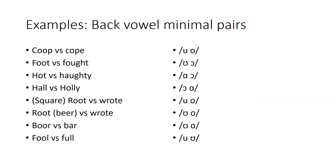Distinctions between the back vowels can be highlighted by minimal pairs. In coop versus cope, we have O versus O. In foot versus fought, we have O versus AW. In hot versus haughty, we have AW versus AW. In hall versus holly, we have AW versus AW. In root versus rote as in square root, we have O versus AW, whereas in root versus rote as in root beer, we have O versus O, at least in my dialect. In something like boor versus bar, we have the distinction before R, and in fool versus full, we have that distinction before L in my dialect.